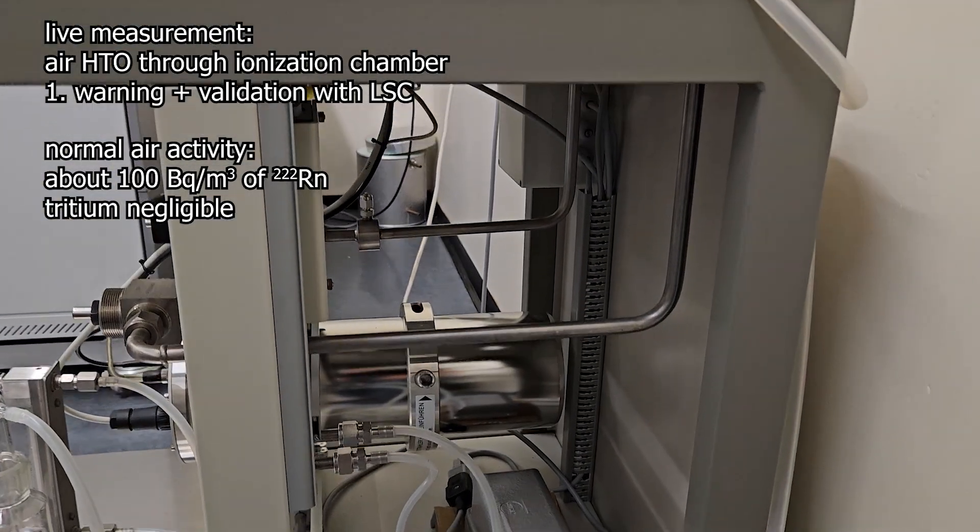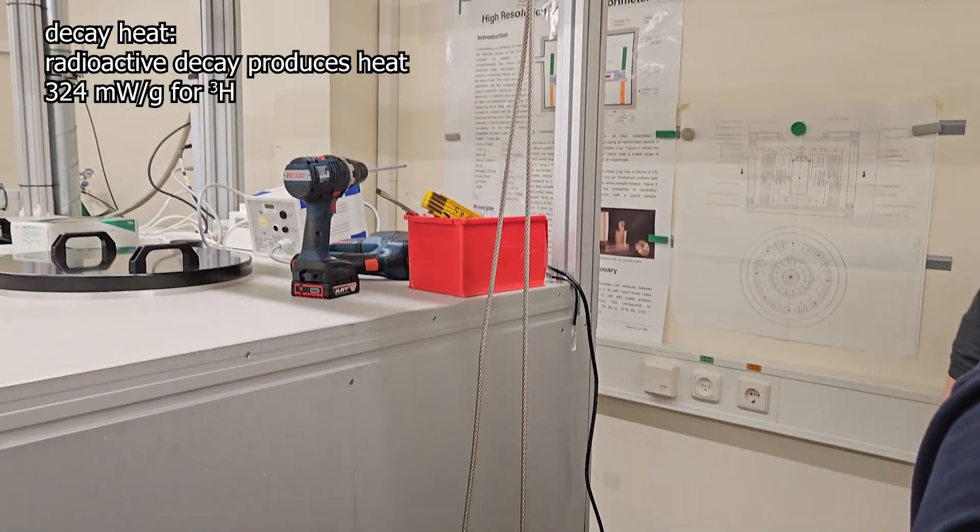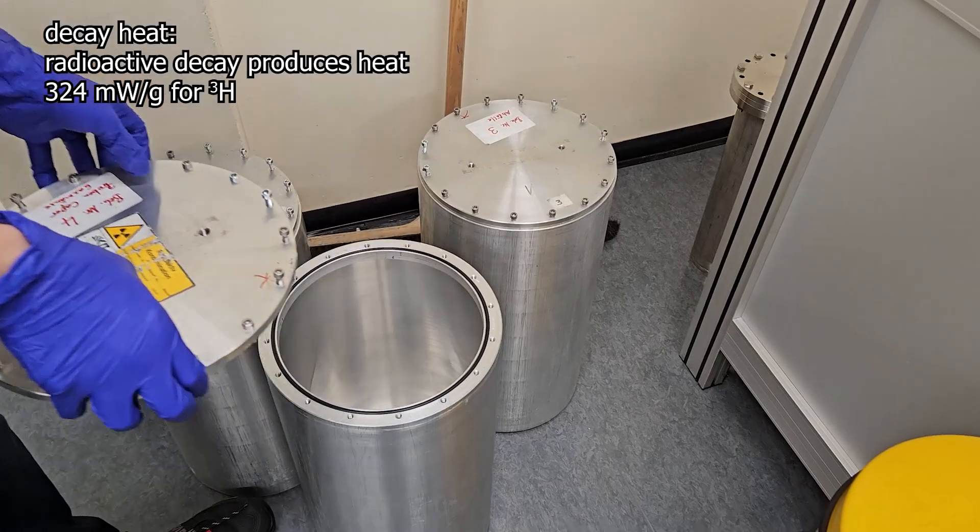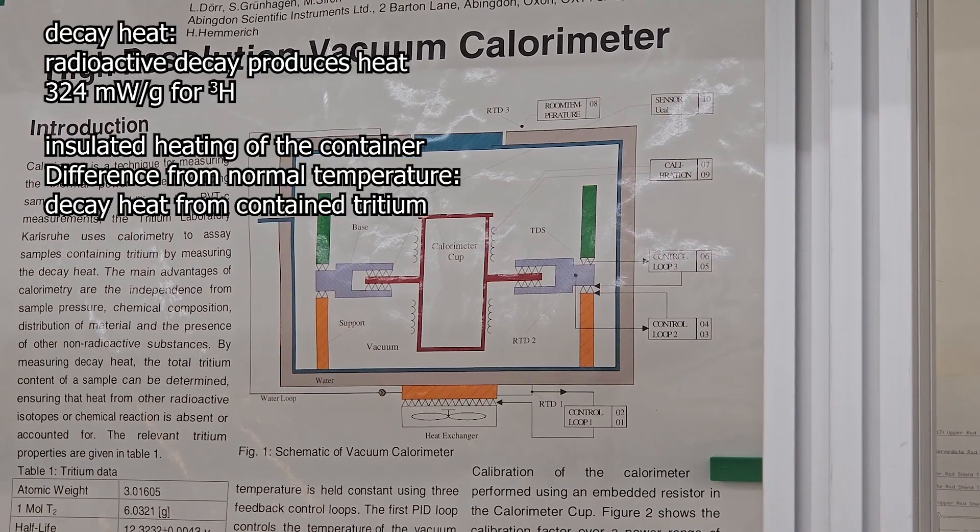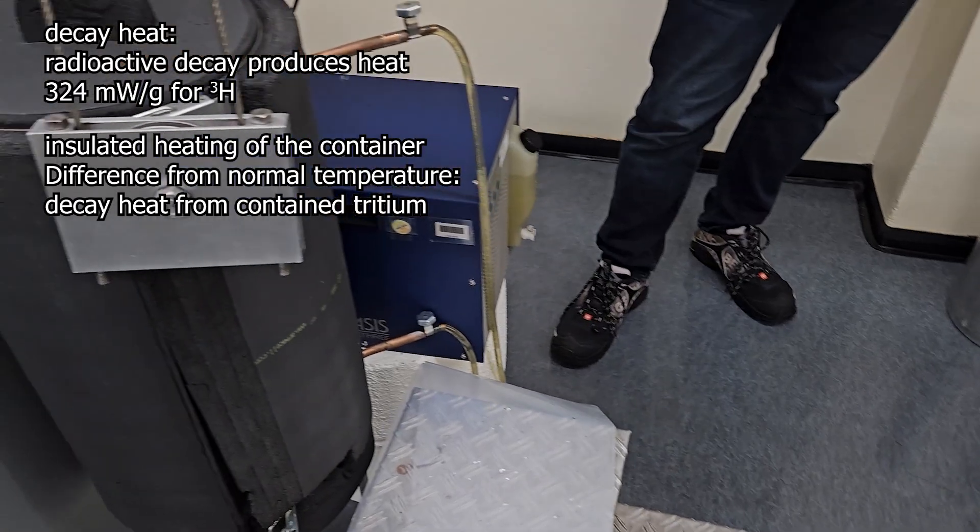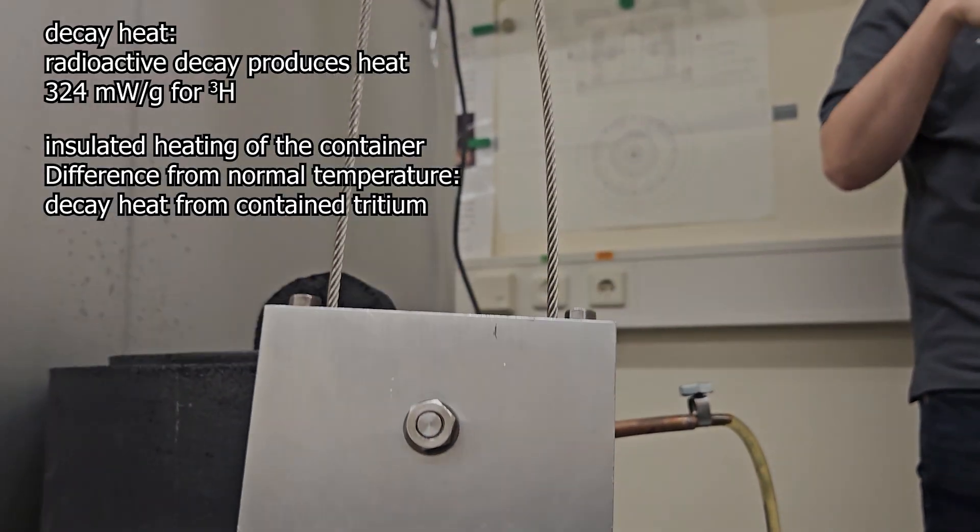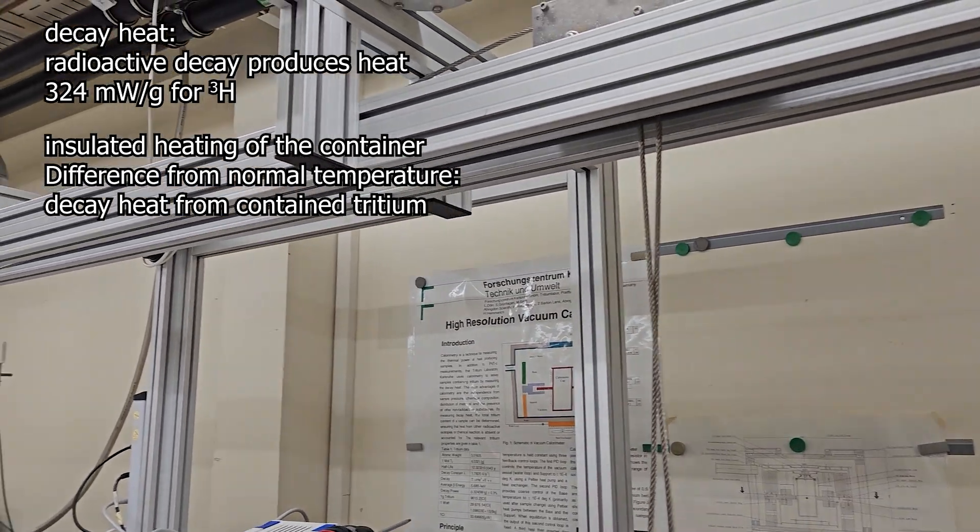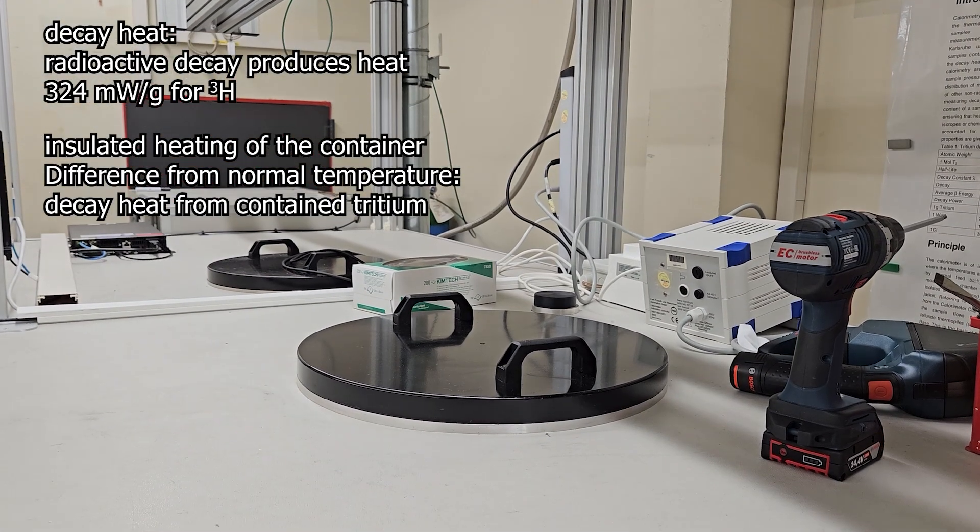Heat of decay. Tritium itself has a specific decay heat of 324 milliwatts per gram. When you have your stuff that's contaminated, you put it in a container like this. Now it takes one watt, let's say, of energy input to bring the box up to 40 degrees C. Now if there's tritium in it, the decay in the canister itself produces heat. And instead of one watt to get to 40 degrees C, you only need 0.9 watts. That means we have a decay heat of 100 milliwatts from tritium. And according to the tritium decay heat of 324 milliwatts per gram, we have about 0.3 grams of tritium.